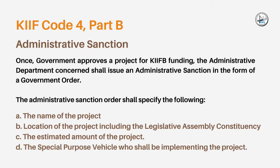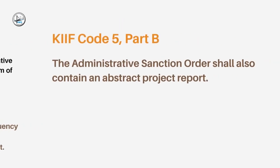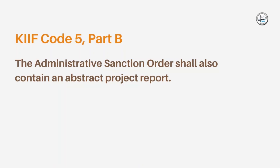The Administrative Sanction Order shall specify the following: A. The name of the project. B. Location of the project, including the Legislative Assembly Constituency. C. The estimated amount of the project. D. The special purpose vehicle who shall be implementing the project. It is mentioned in Code 5, Part B, that the Administrative Sanction Order shall also contain an abstract project report.